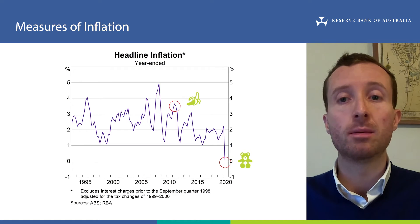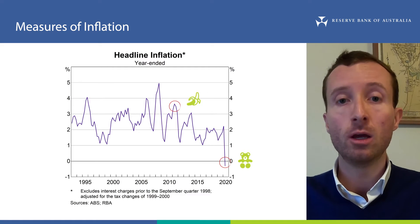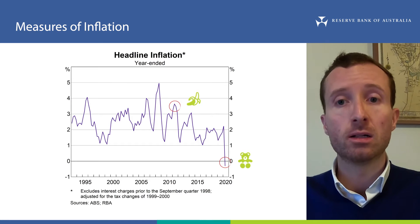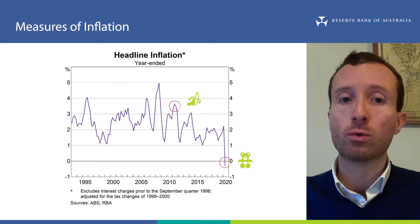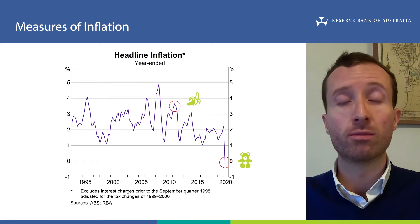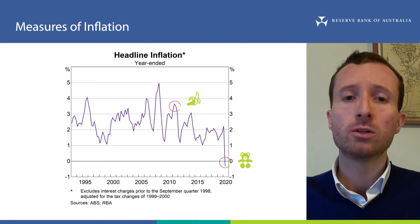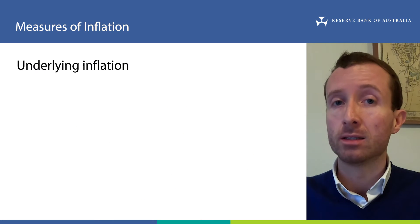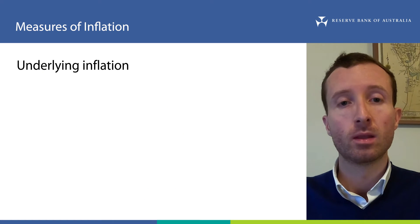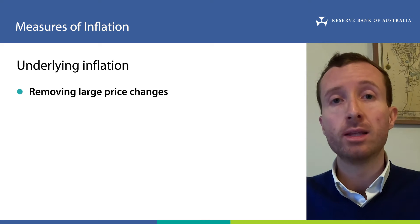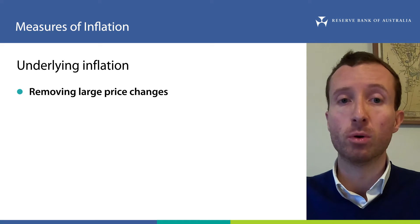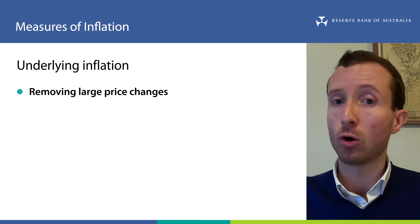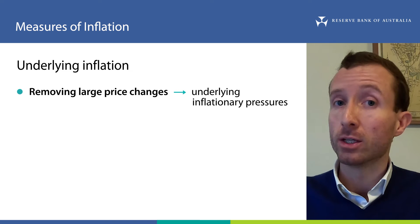For example, even though child care became free temporarily during the second quarter of 2020, groceries did not. As a result, we may want to remove or look through these large price changes to get a sense of general inflationary pressures in the economy. To do this, the Reserve Bank closely monitors measures of underlying inflation. By removing larger price changes, these measures focus on how the prices of most goods and services are changing in the economy — the underlying inflationary pressures.